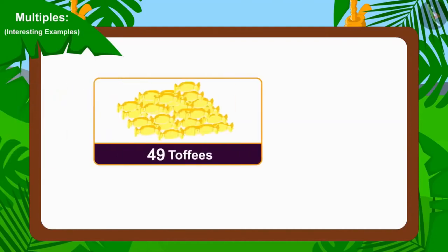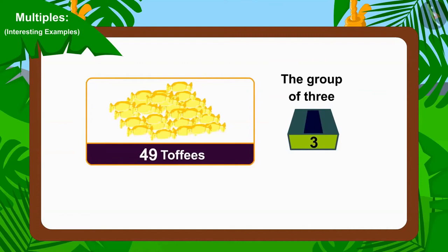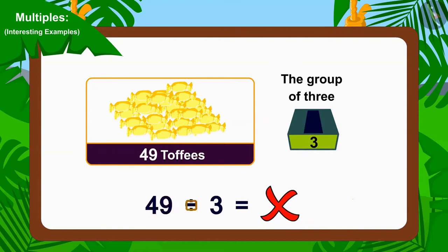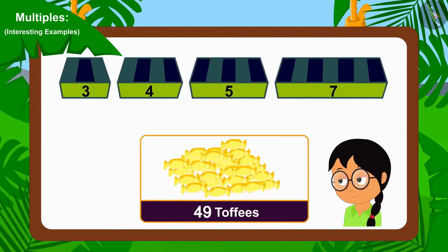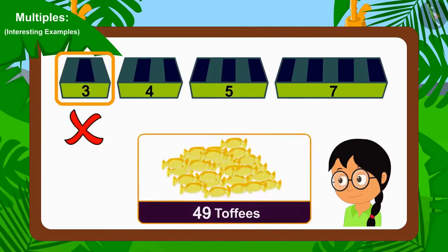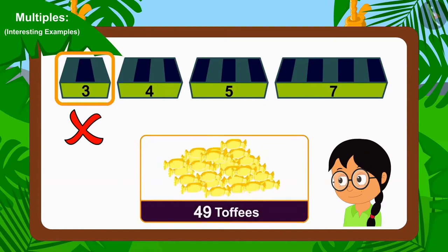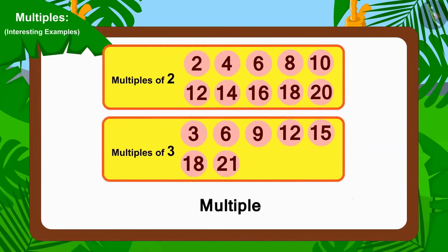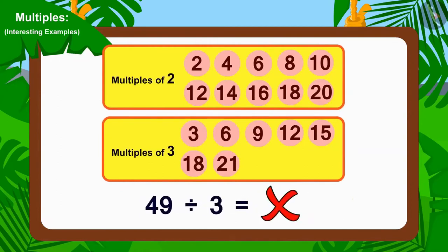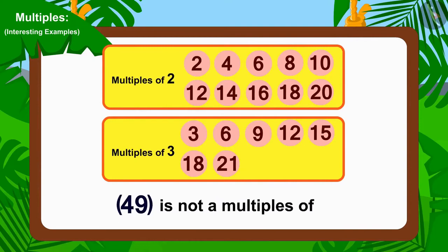Let's first try to divide these toffees into groups of 3 and see if there are any toffees left. We just have to see if we can divide 49 by 3. No, we cannot divide 49 by 3. Therefore, Meenu cannot use groups of 3 to distribute 49 toffees. Because we cannot divide 49 by 3, we can say that 49 is not a multiple of 3.